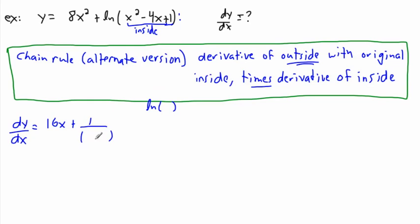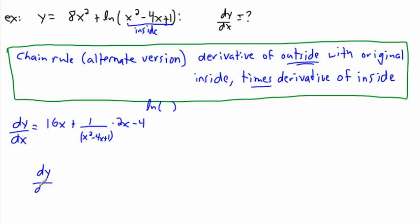That was the derivative of the outside. Now I feed it the original inside: x squared minus 4x plus 1. Then I multiply by the derivative of the inside. The derivative of x squared is 2x, the derivative of negative 4x is minus 4, and the derivative of 1 disappears.